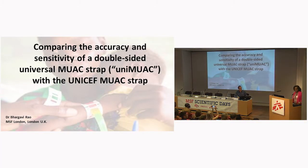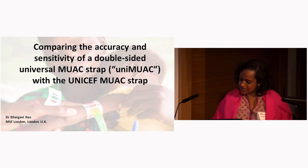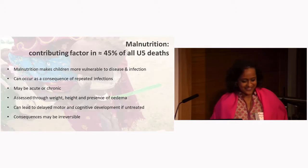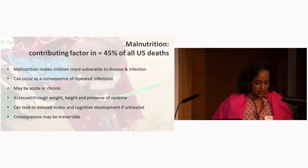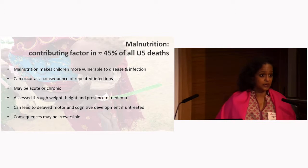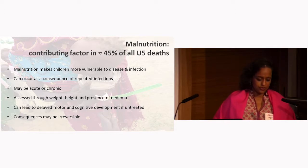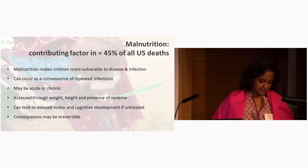Although no malaria or infectious diseases today, as many of you know, malnutrition is thought to be the underlying contributing factor in about 45% of all under-five child deaths, implicated in over three million deaths annually. In short, malnutrition makes young children more vulnerable to severe diseases.